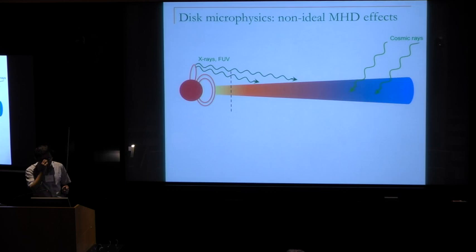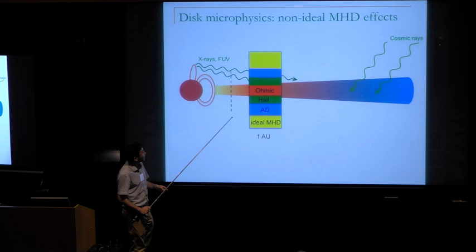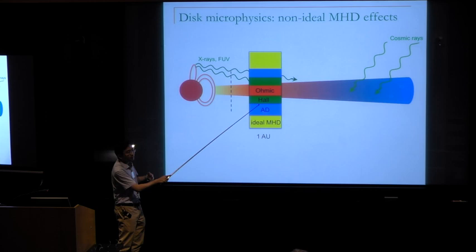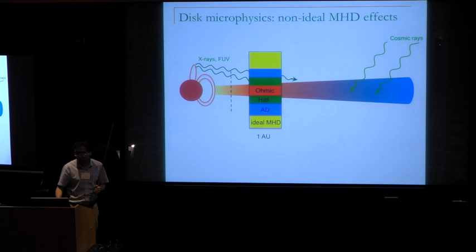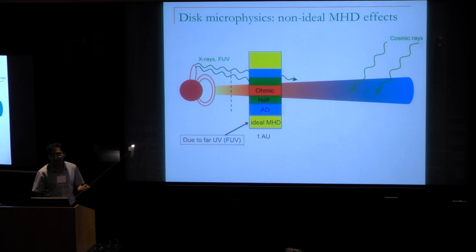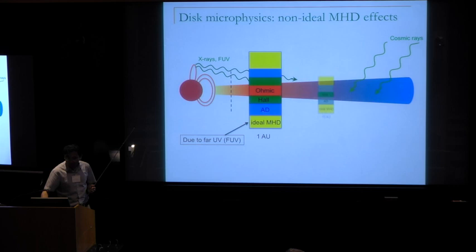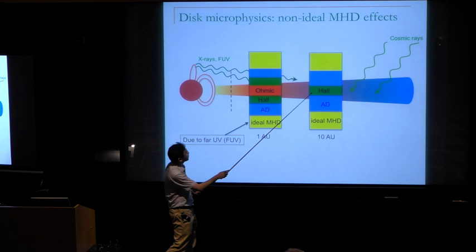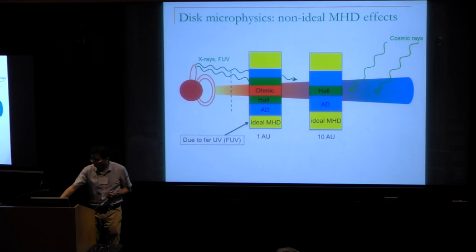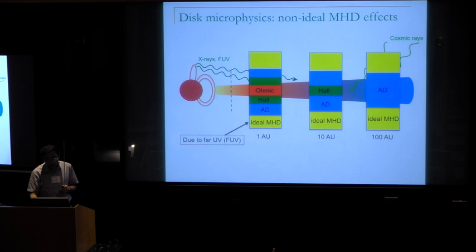In disks: ohmic resistivity is important in the densest part — the mid-plane region of the inner disk. Moving up as density drops, you're dominated by the Hall effect, then by ambipolar diffusion further up. At the very surface layer, far UV can penetrate and boost the ionization fraction, bringing the gas into more or less the ideal MHD regime. Moving radially outward, ohmic becomes unimportant; Hall dominates at the mid-plane, then ambipolar diffusion, then ideal MHD. The outer disk is entirely ambipolar diffusion-dominated.